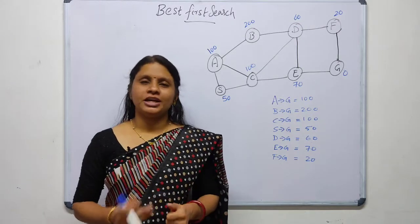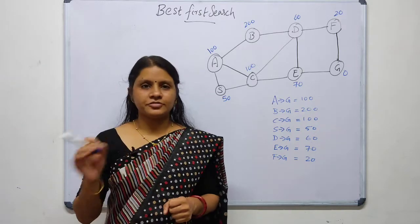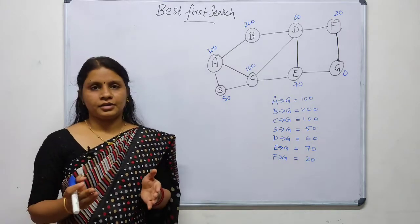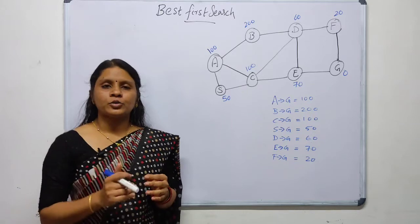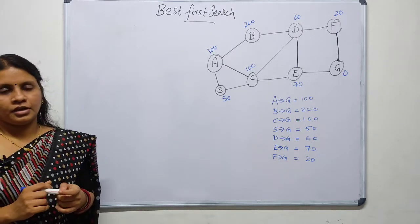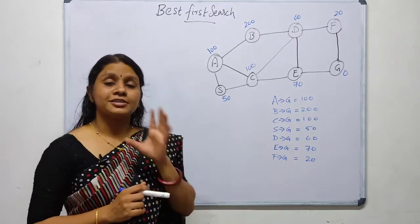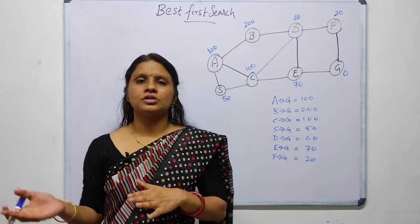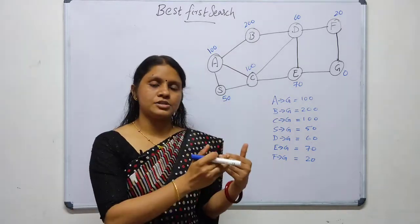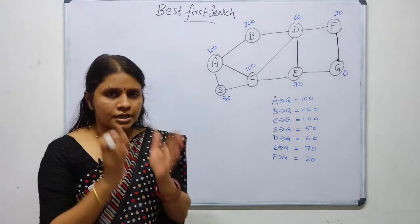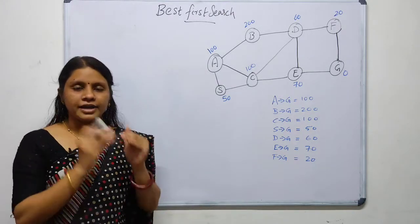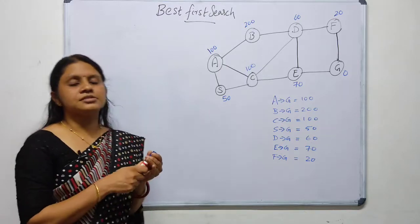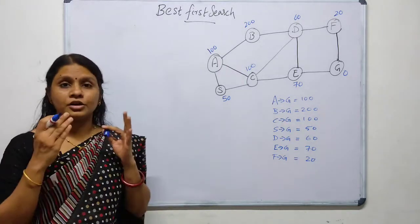Welcome to this video where we will discuss Best First Search in artificial intelligence. It falls under the informed search category and uses the concept of a priority queue and heuristic search. The main aim of Best First Search is to find the shortest path from the initial state to the goal state — a graph is given with an initial state and a goal state.